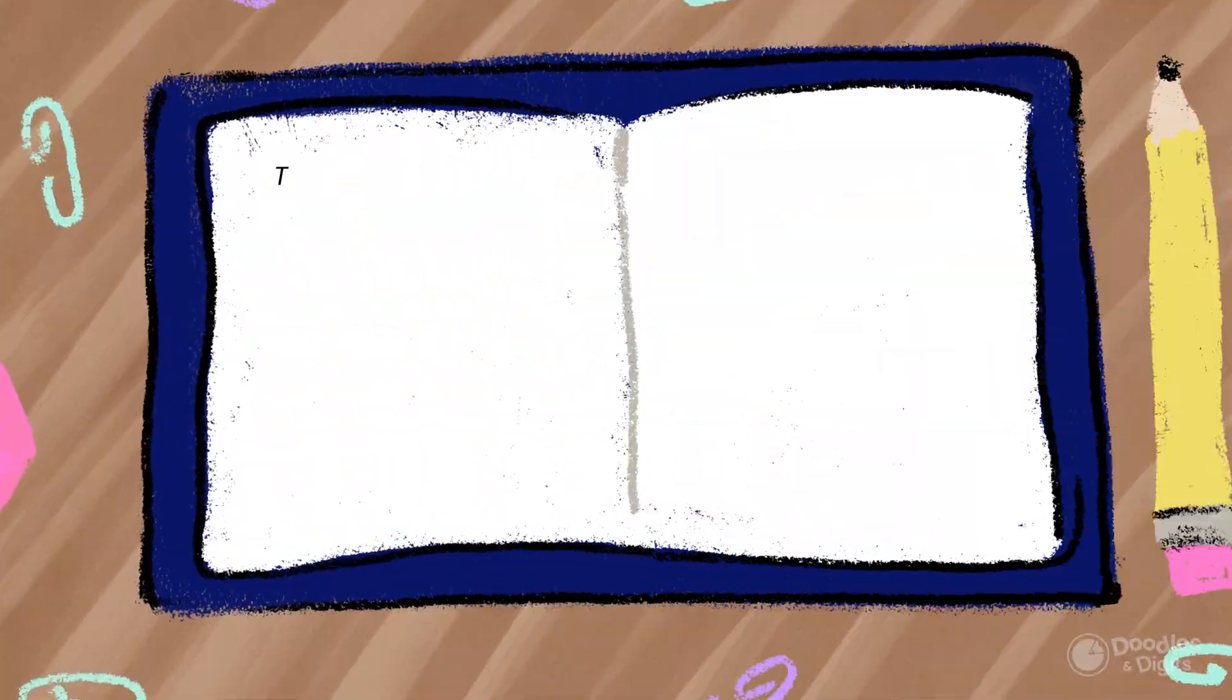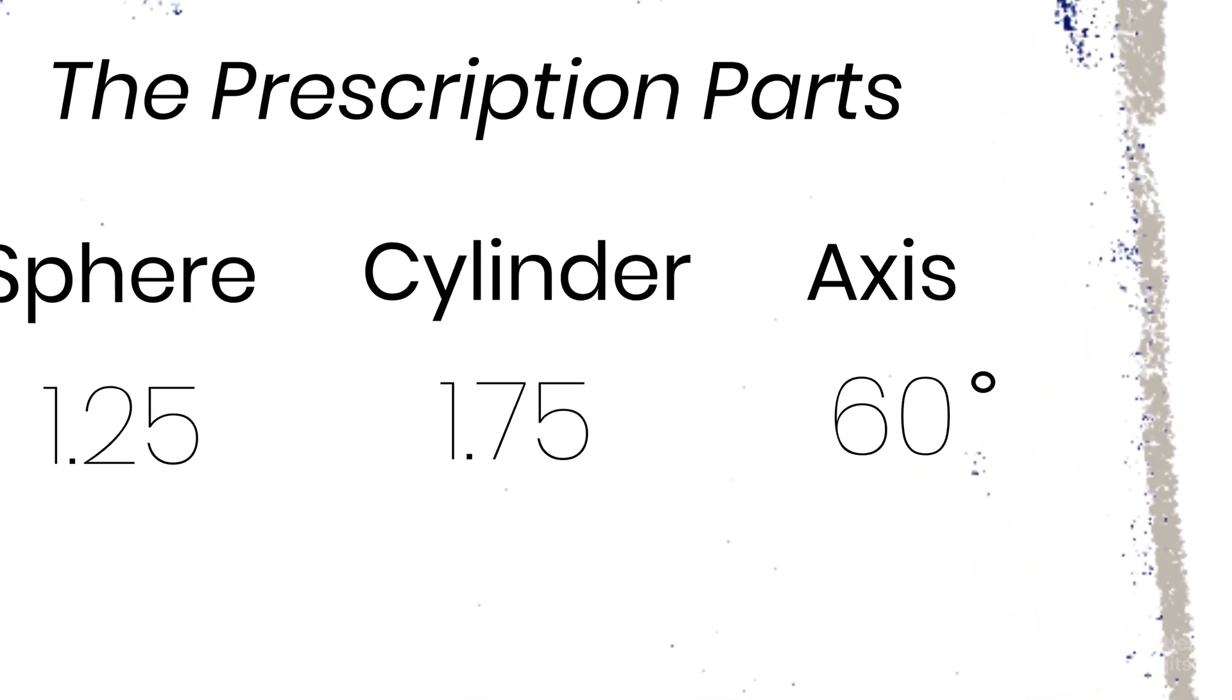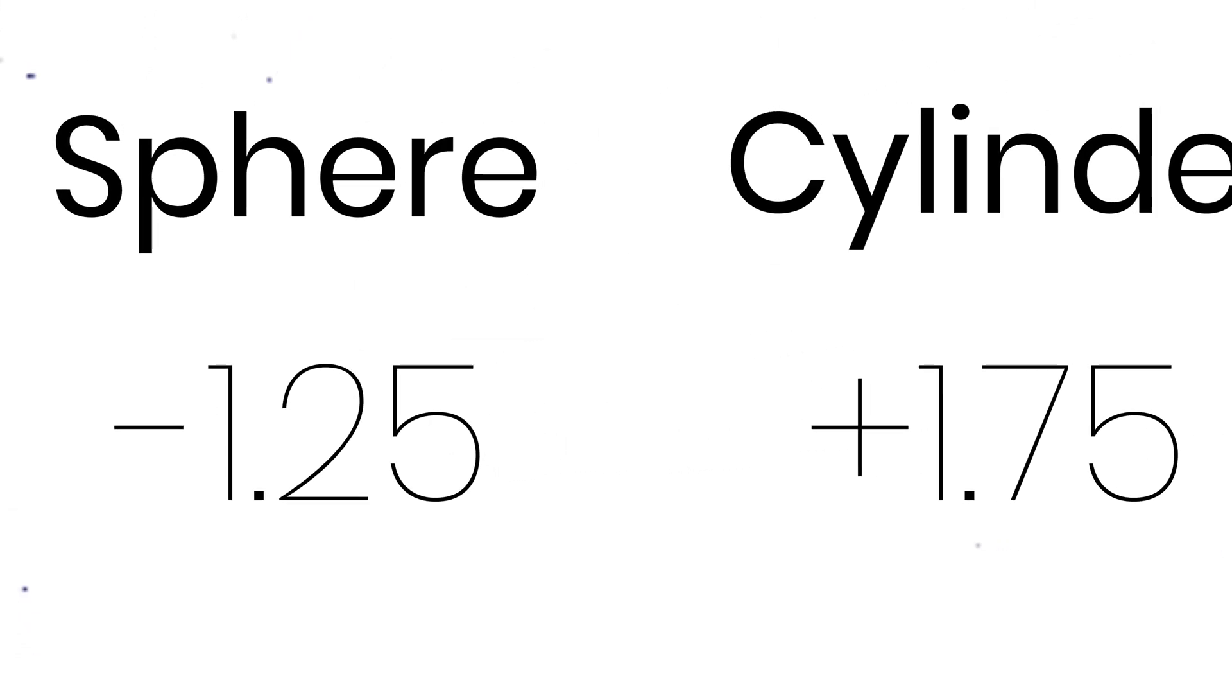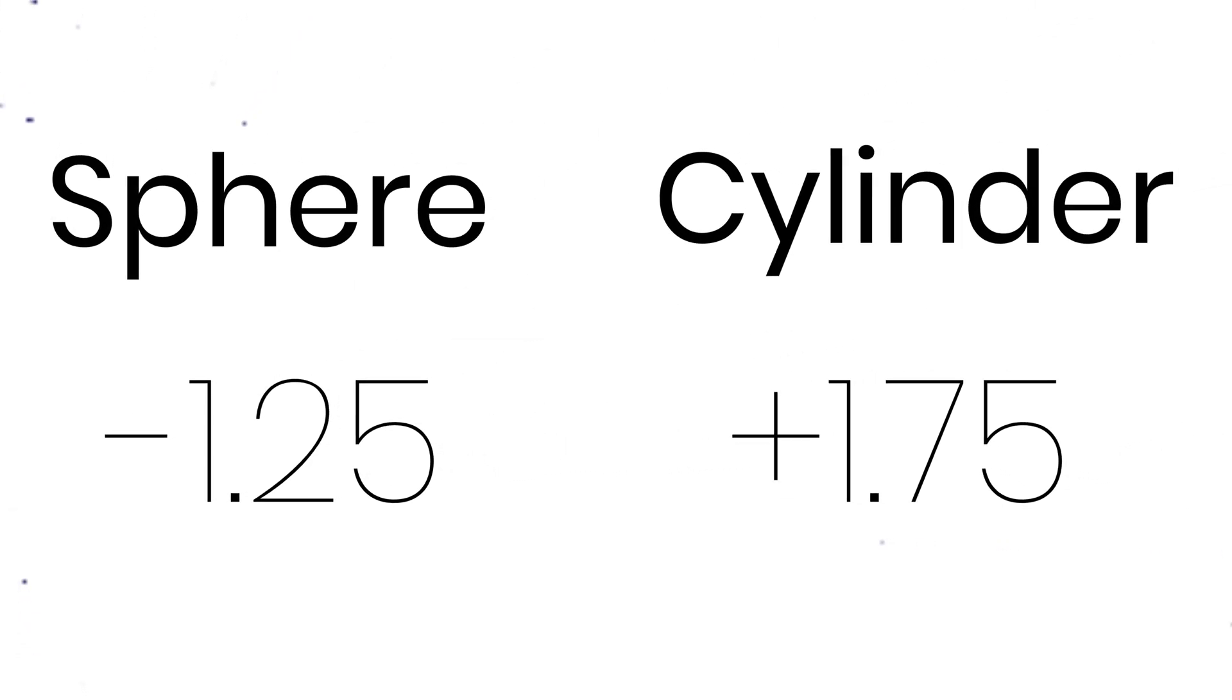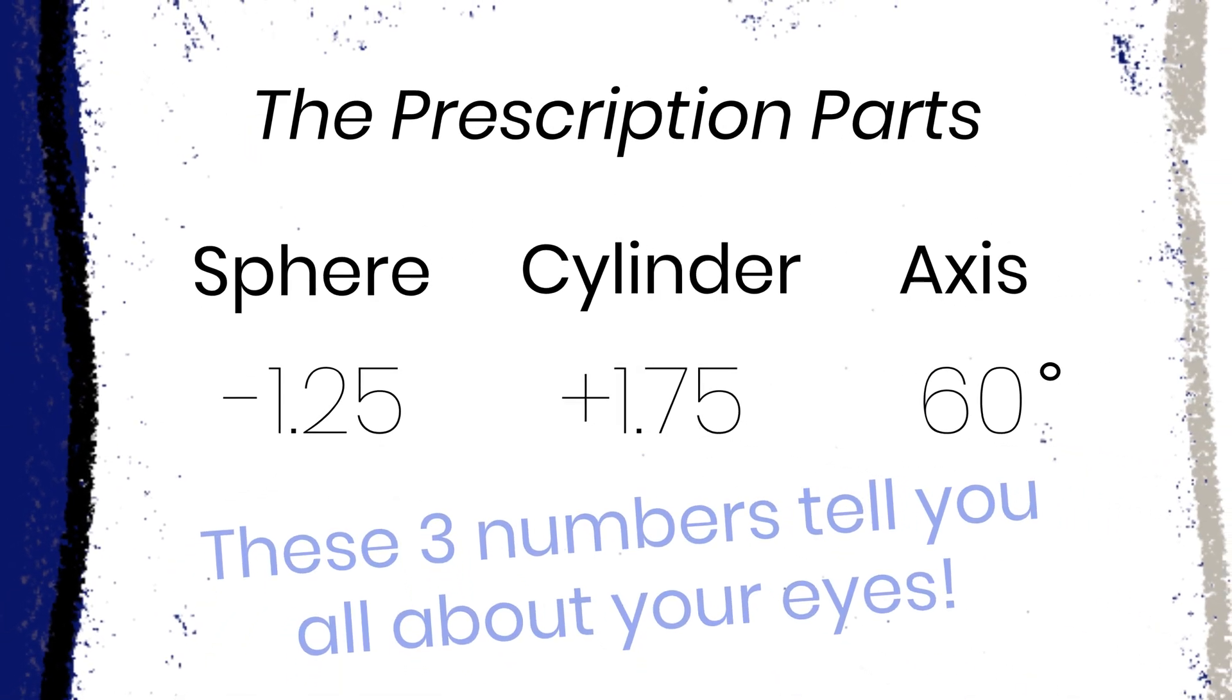There's three components to a prescription: the sphere component, the cylinder component, and the axis component. There's three different numbers that are written together and they can be a plus or a minus. A plus lens is what we prescribe for our far-sighted patients. A minus lens is what we prescribe for our near-sighted patients.